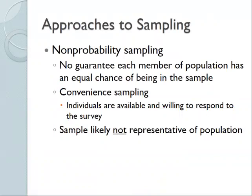There are two approaches to sampling: non-probability and probability. Non-probability sampling does not guarantee that every part of the population has an equal chance of being included. A common method is convenience sampling, where respondents are selected based on availability and willingness — like stopping random people on the street, call-in radio shows, or undergraduate participant pools at universities. With convenience sampling, we assume results probably won't be representative and that there's some kind of bias, unless there's strong evidence confirming representativeness.